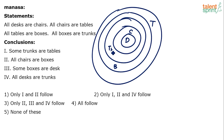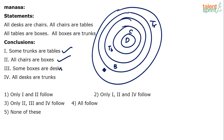I have to be very clear — these are tables and these are trunks, T and T. So all desks are chairs, all chairs are tables, all tables are boxes, all boxes are trunks. Conclusions: some trunks are tables — yes, true. All chairs are boxes — yes, true. Some boxes are desks — yes, true.